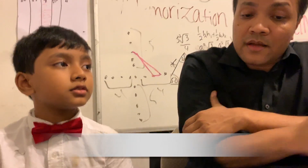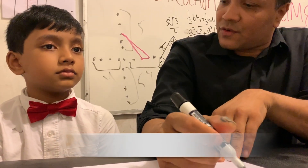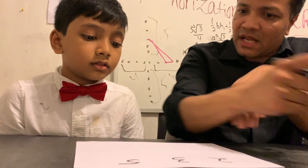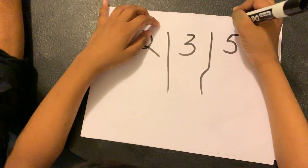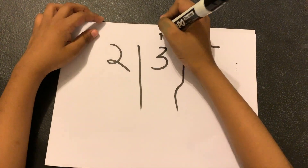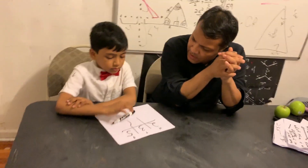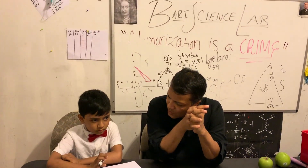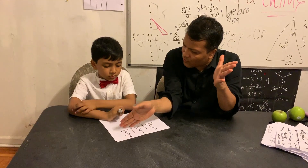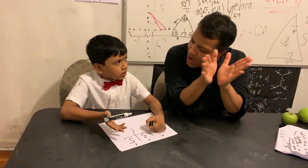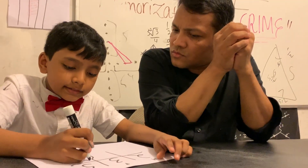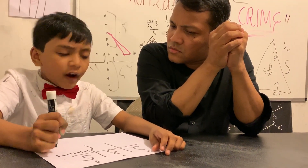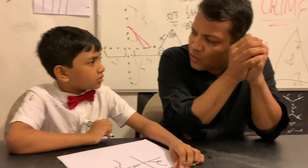Now let me quiz you on that. 235 - can you tell me the place value for five? The place value for five would be in the ones, three in the tens, and two in the hundreds. Now can I make it a little more complicated? I'm going to call them groups. Five groups of one - how can you write five groups of one in math? Five ones: one, two, three, four, five ones. So this is five groups of one.